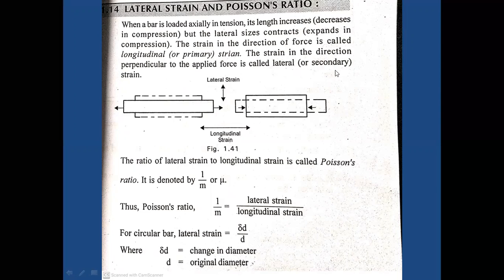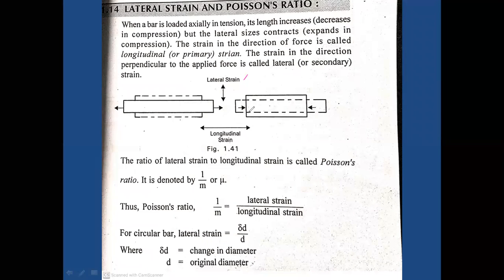The strain in the direction perpendicular to the applied force is called lateral strain. If strain is induced by axial force, we call it longitudinal strain. If strain is induced in the diametral direction — perpendicular to the axial force — we call it lateral strain. The ratio of lateral strain to longitudinal strain is called Poisson's ratio, denoted as 1/m or mu.